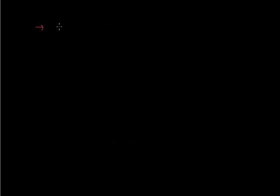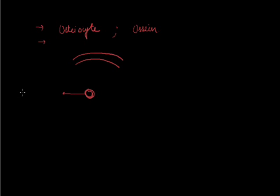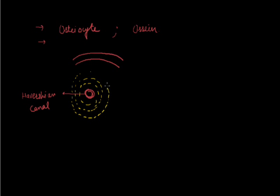Now the structure of bone: bone cells are called osteocytes, and the protein present in bone is called osteoprotein. Osteocytes are arranged in a concentric manner around a canal called the Haversian canal. Various osteocytes form concentric rings around this canal, and together these structures form the Haversian canal system, all embedded in the matrix of bone.